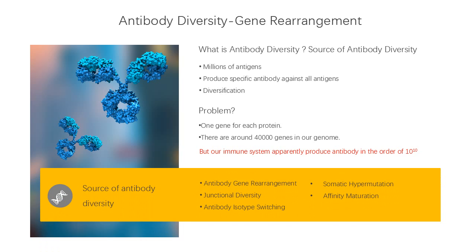What is antibody diversity? There are millions of antigens or epitopes. Our immune system has the ability to produce specific antibodies against all antigens. This diversification in antibody production is known as antibody diversity. But there is a problem: in our basic concept, one gene only can code each protein, including almost all immunoglobulins. According to the one gene one protein concept, our genetic system should contain millions of genes to produce millions of types of Ig.